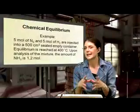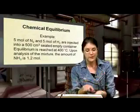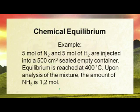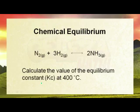Let's look at the example. We have 5 moles of nitrogen gas and 5 moles of hydrogen gas injected into a 500 cubic centimetre sealed empty container. Equilibrium is reached at 400 degrees Celsius, and upon analysis the amount of ammonia at equilibrium is 1.2 moles. The balanced equation is given and we need to calculate the value of the equilibrium constant Kc at 400 degrees Celsius.